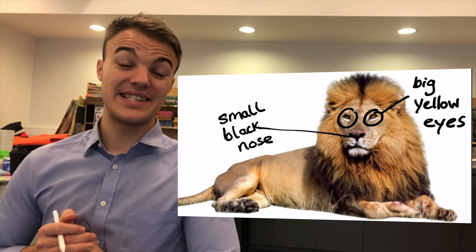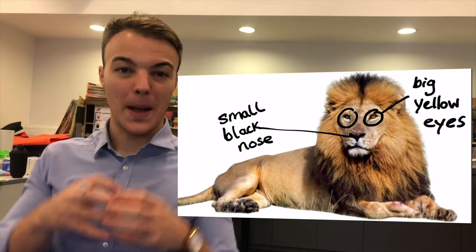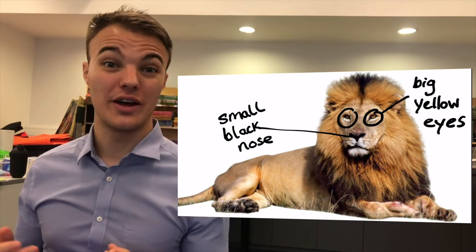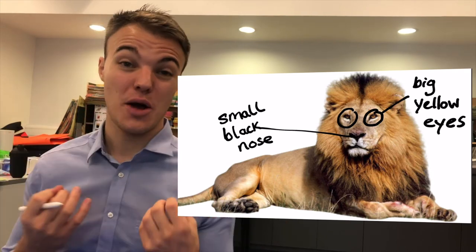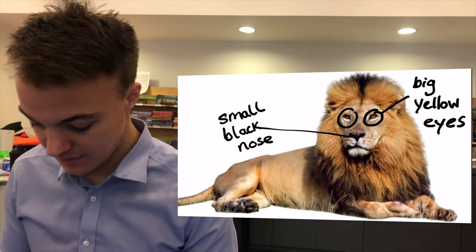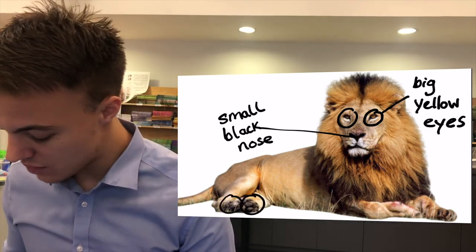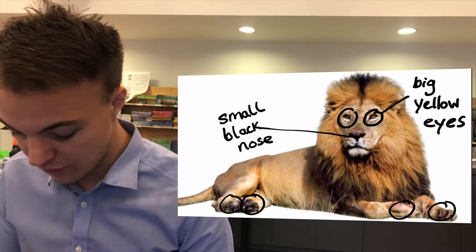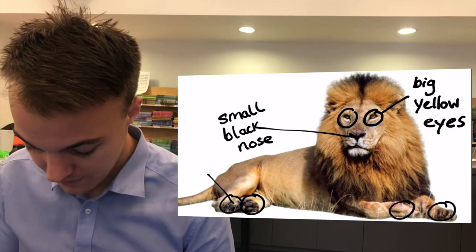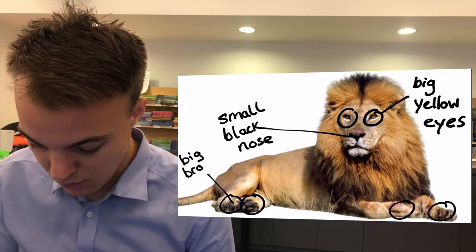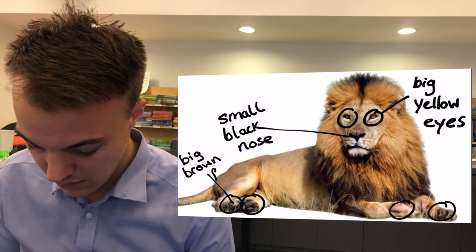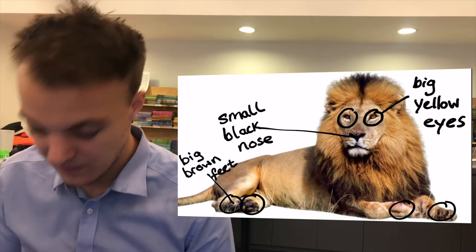And I can see that the lion has four big brown feet. Can you see? Four big brown feet. One, two, three, four. Big brown feet.